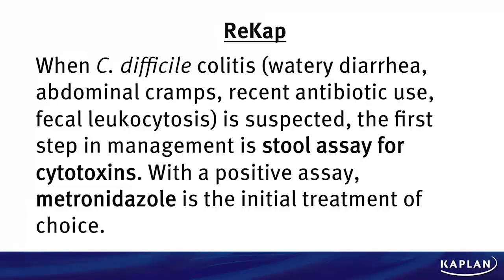Big takeaways from this question: when we've got C. diff colitis presenting with watery diarrhea, abdominal cramps, recent antibiotic use, and fecal leukocytes, the first thing to do to diagnose it is get a stool assay for the C. diff cytotoxin. When that comes back positive, initiate metronidazole. If metronidazole doesn't work after a few trials, give vancomycin. That's how you're going to treat this patient and the hundreds of C. diff patients you'll see in your career.